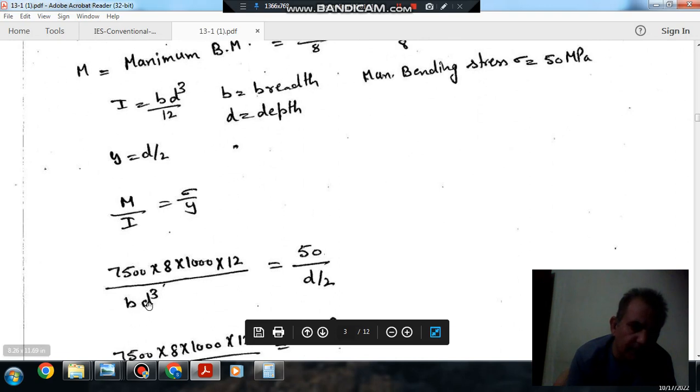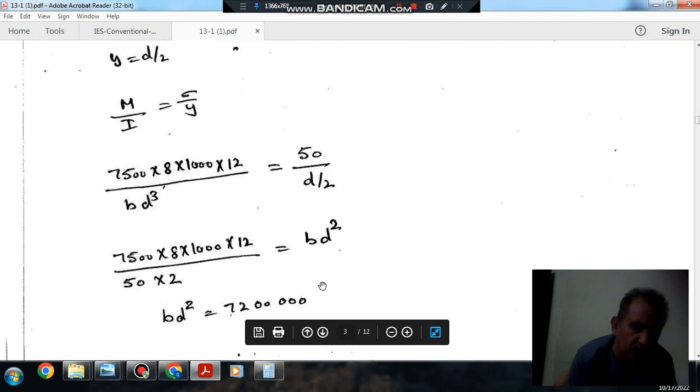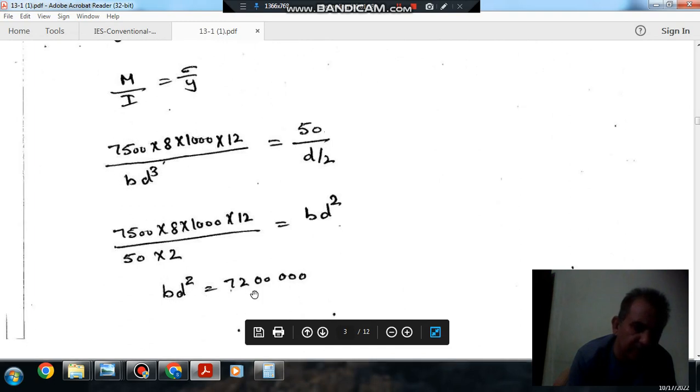And I is BD cubed by 12, and this is 50 MPa, and this is D by 2. So BD square comes out as 72000.